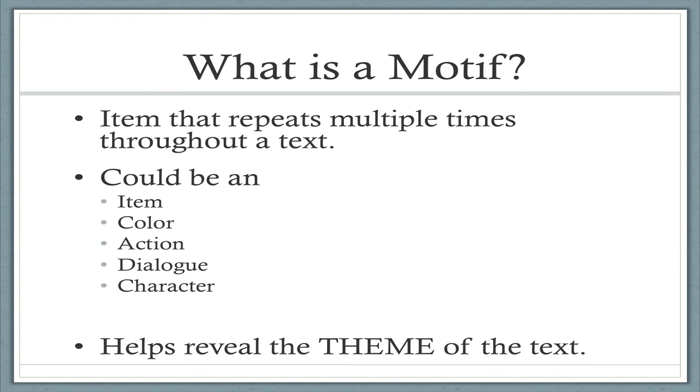So first off, what is a motif? A motif is defined as an item that repeats multiple times throughout a text. And so that item could be an actual physical item, like a shell, a pair of glasses, a car. Or that motif could be a repeated color or action, piece of dialogue, or perhaps even a character.